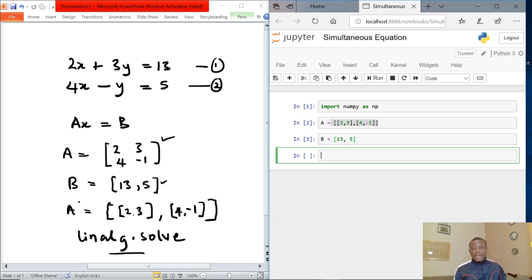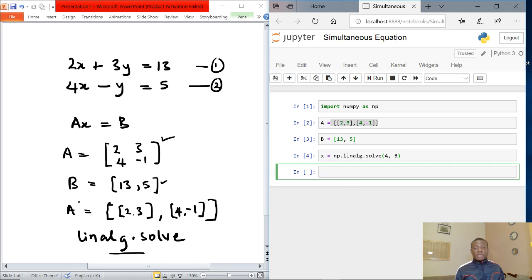Now the results, which is x, is going to be x equals np.linalg.solve. If you specify this function, it takes two parameters, and those two parameters are simply A and B. That's all. So if you run it at this point, it gives you the result. How do we see the result? The result is now contained in the variable x. So simply say print x.